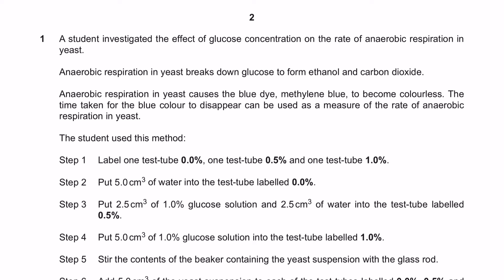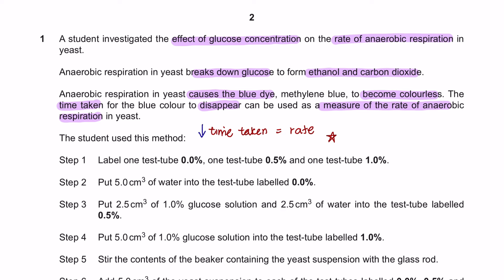Question 1. A student investigated the effect of glucose concentration on the rate of anaerobic respiration in yeast. Anaerobic respiration in yeast breaks down glucose to form ethanol and carbon dioxide. It causes the blue dye methylene blue to become colourless. The time taken for the blue colour to disappear can be used as a measure of the rate of anaerobic respiration. If the time taken is shorter, this tells us that the rate of respiration is higher.